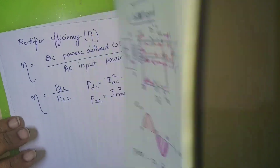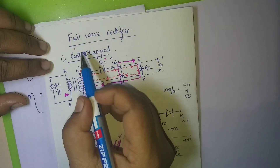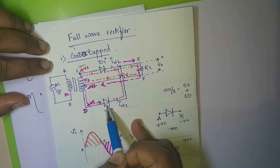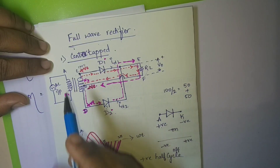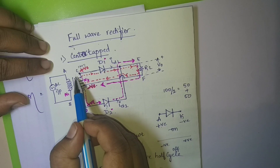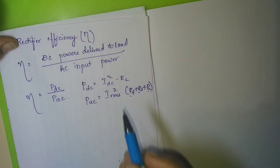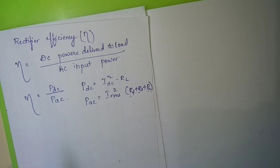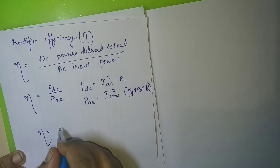RL is the load resistance. In the circuit, the diodes have forward resistance RF, RL is the load resistance, and the secondary winding has internal resistance RS. To calculate the efficiency, we use IDC squared in the numerator.